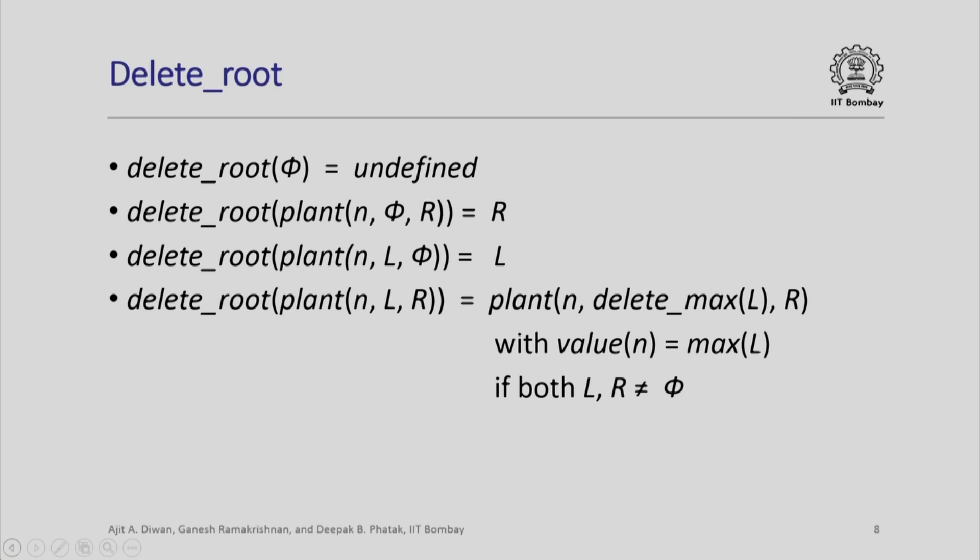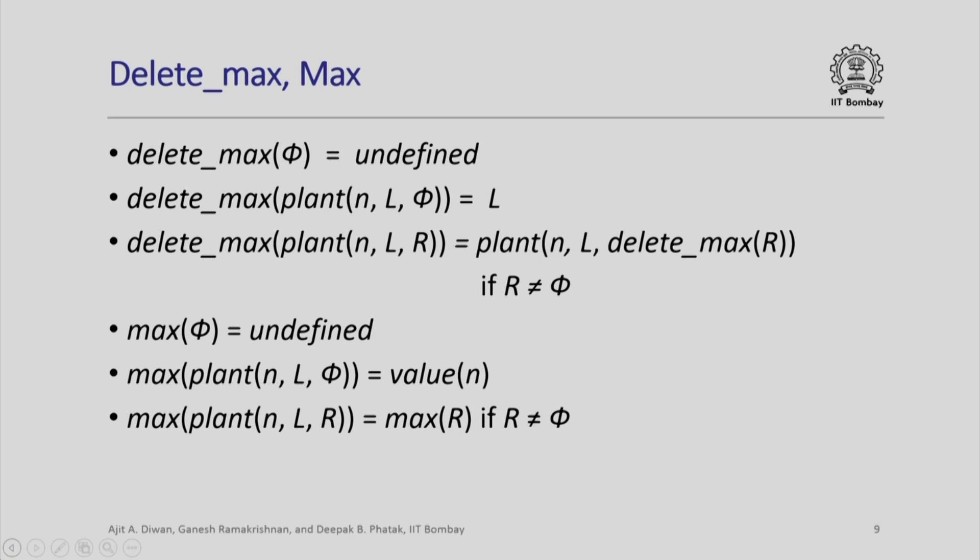The new tree is plant(n, delete_max(l), r) with value(n) set to max(l). delete_max is similarly defined: for an empty tree it is undefined; if the right subtree is empty, the max is in the root node itself and we return just the left subtree; if the right subtree is not empty, deleting the max recurses into the right subtree — we get plant(n, l, delete_max(r)).